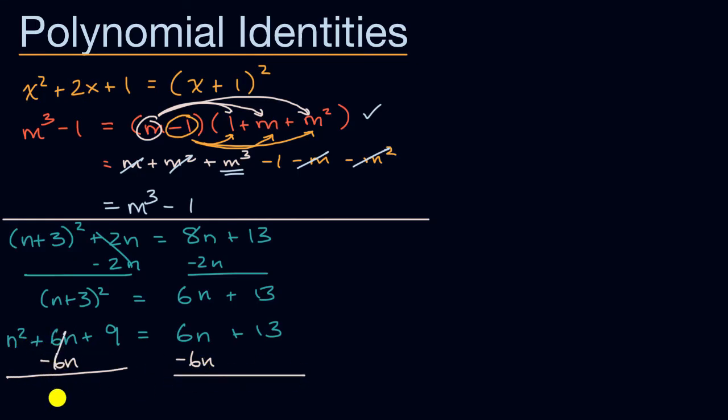Well, on the left-hand side, you're just going to have n squared plus 9. And on the right-hand side, you're going to get 13.